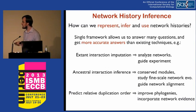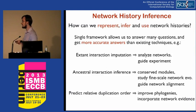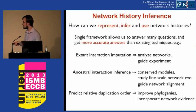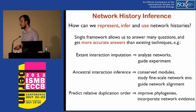One is predicting extant interactions: can we impute interactions between extant proteins using an inferred network history? This can help us analyze networks and guide experiments. Another is ancestral interaction inference: can we find conserved modules, study the fine-scale structure of network evolution, and use this to guide network alignment? And finally, we have predicting relative duplication order: can we use the network to help inform sequence-based estimates of the duplication order of proteins?